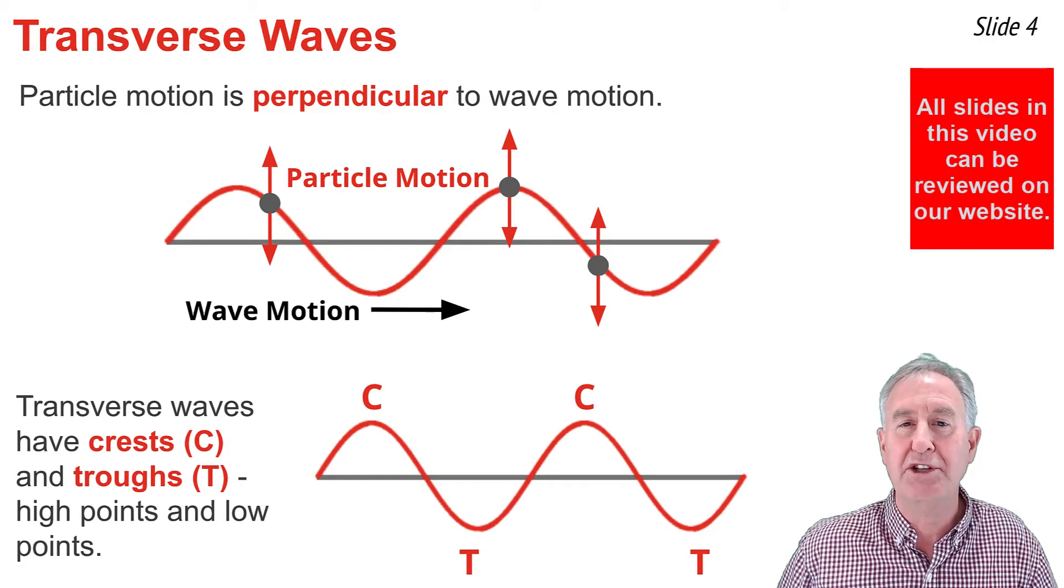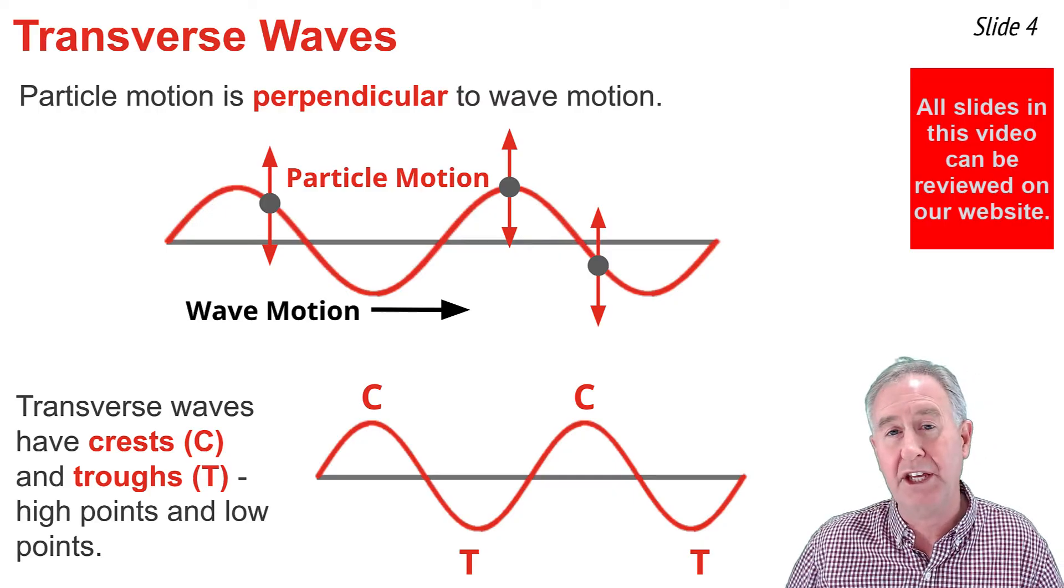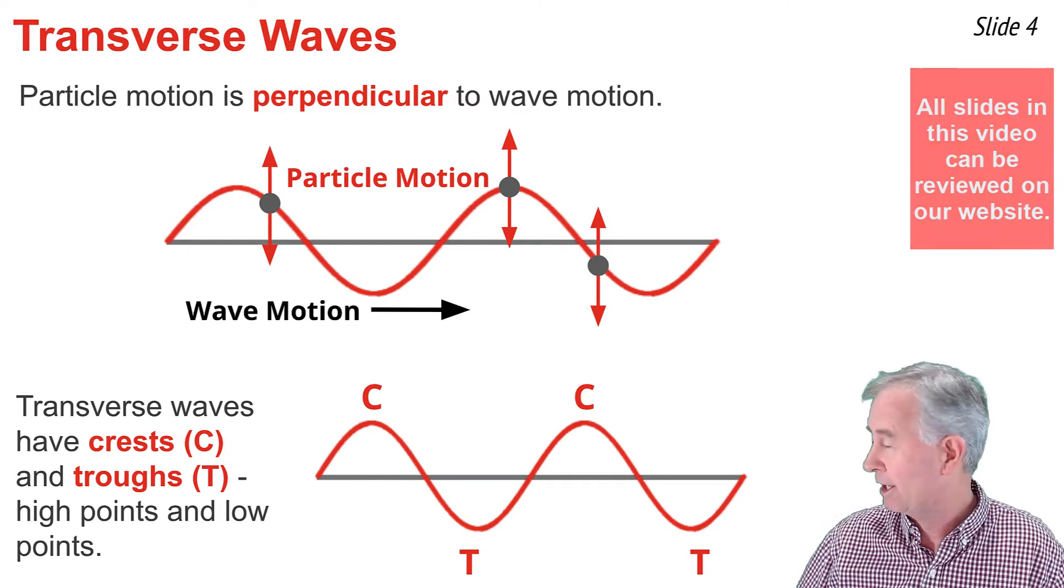When particles move in this manner, a series of crests and troughs are produced within the pattern. The crests are the high points denoted by the letter C, and the troughs are the low points denoted by the letter T.